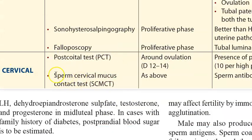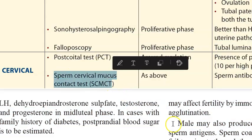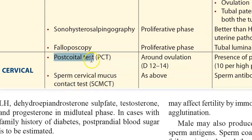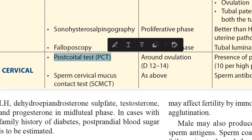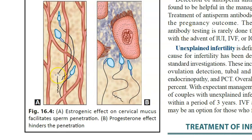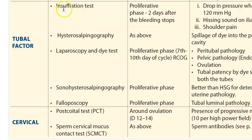For the cervical factor, they do a post-coital test and a sperm-cervical mucus contact test, which is an in vitro test checking for antibodies to the sperm. If there are antibodies to the sperm it is very difficult to get pregnant. In the post-coital test they check if the sperms are motile. This photo shows sperms are able to enter - this is the estrogenic effect on cervical mucus.